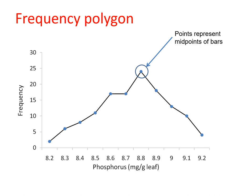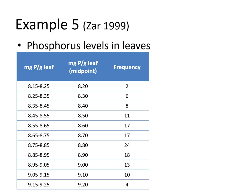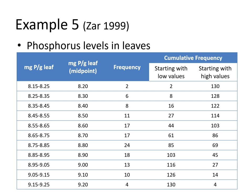So you have the range, the midpoint, and the frequency. There is another set of information you can extract from this table: cumulative frequencies. You can either start with the low values or the high values. If we start with the low values: between 8.15 and 8.25 you have 2, then 2 plus 6 is 8, 8 plus 8 is 16, 16 plus 11 is 27, and so on until you get the total number of measurements, which is 130.